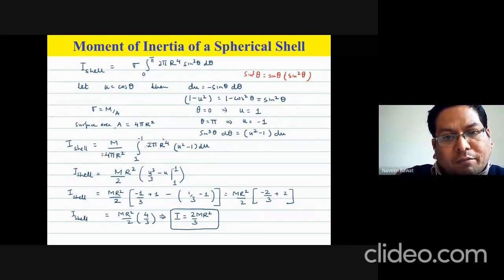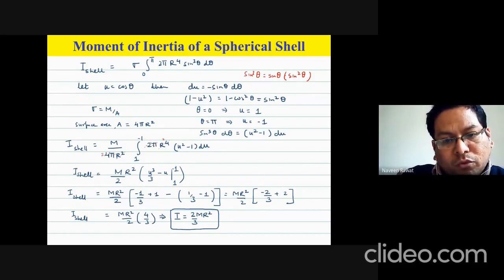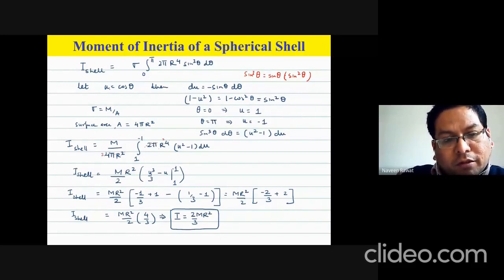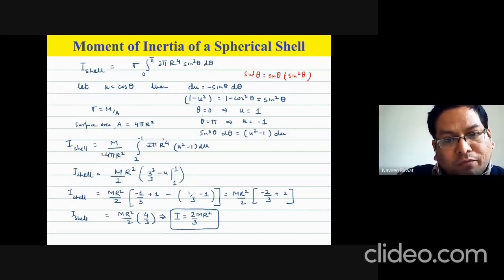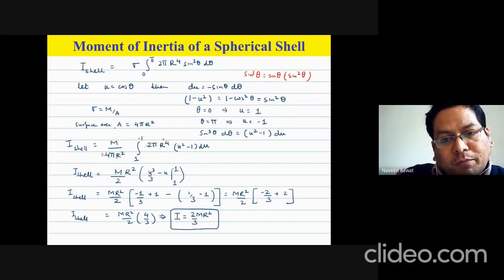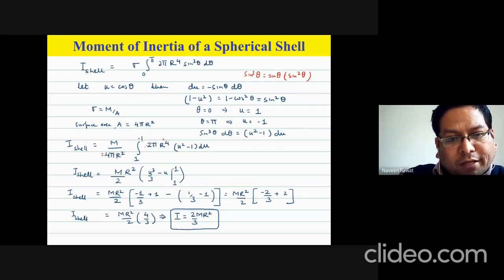The integral becomes 2πR⁴ ∫(u² − 1) du, where the negative sign flips 1 − u² to u² − 1. You must also change the limits: when θ = 0, u = cos 0 = 1; when θ = π, u = cos π = −1. So the integration limits become 1 to −1.